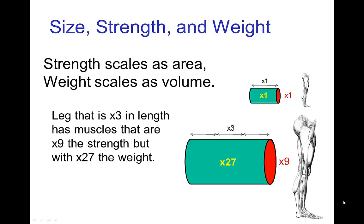This is important in terms of the scale of characters or animals, in that the strength of muscles scales as the area, because it's the cross-sectional area of a muscle that determines its total strength, same thing for bones. However, the weight scales as volume. So if we have a small leg and a large leg, the leg that's three times longer has muscles that are nine times stronger, however that leg weighs twenty-seven times more than the small one.